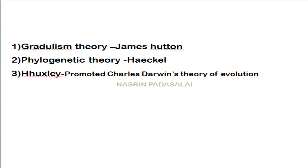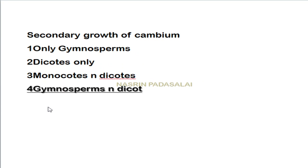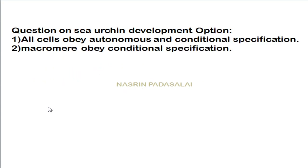On evolution and ecology: the gradualism theory was given by James Hutton, and phylogenetic theory was given by Ernst Haeckel; Huxley further developed Charles Darwin's theory of evolution. Secondary growth of cambium occurs only in gymnosperms and dicots.